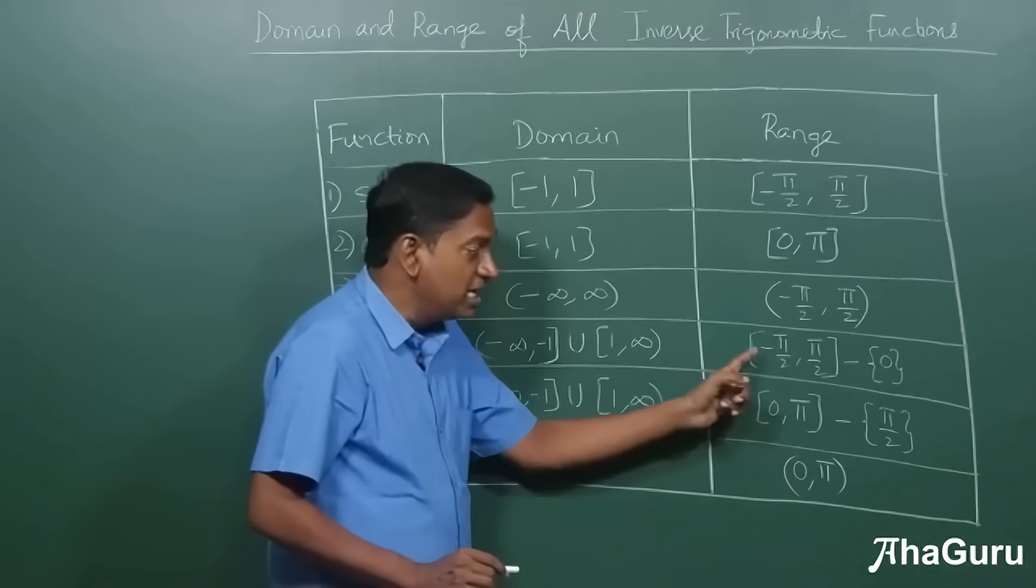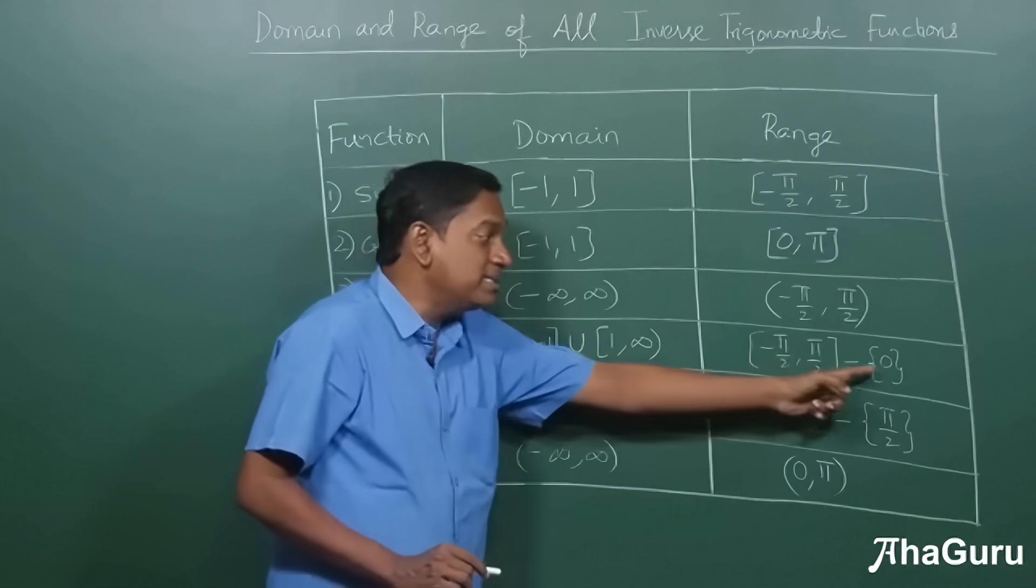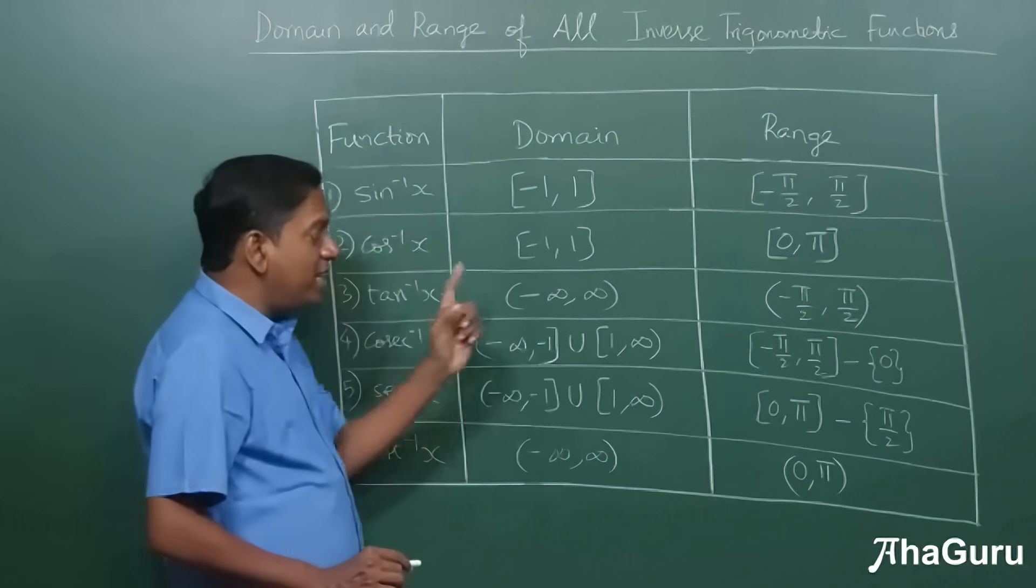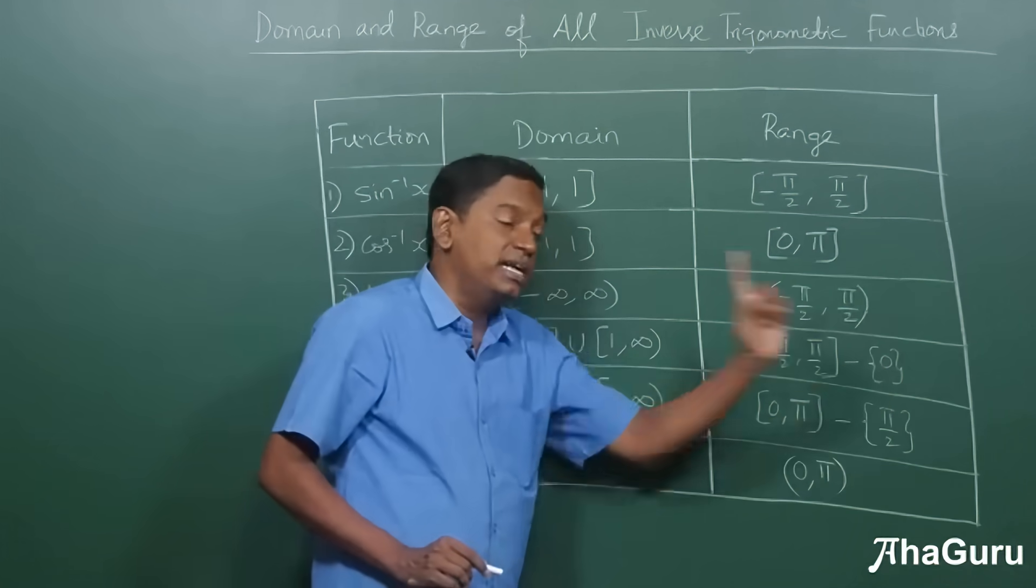Again, the range is between minus pi by two to pi by two, closed interval except for the value zero. So cosecant inverse can never return the value zero because cosecant zero is undefined.